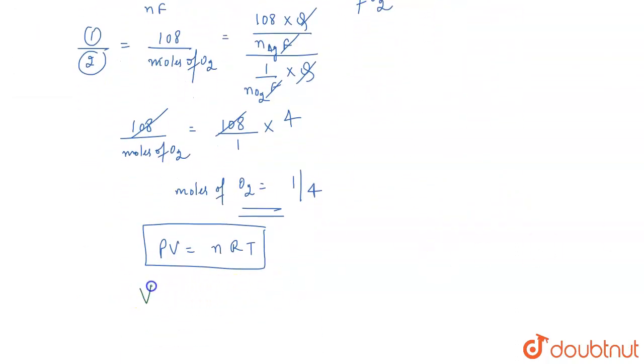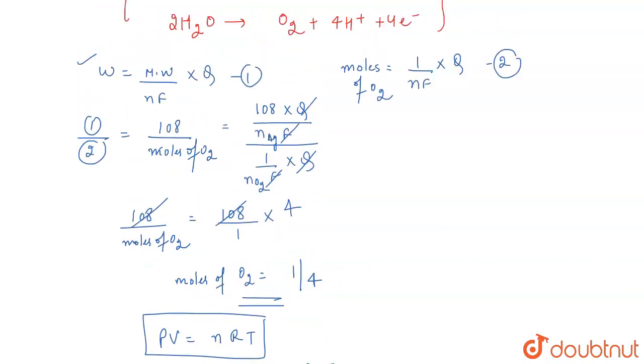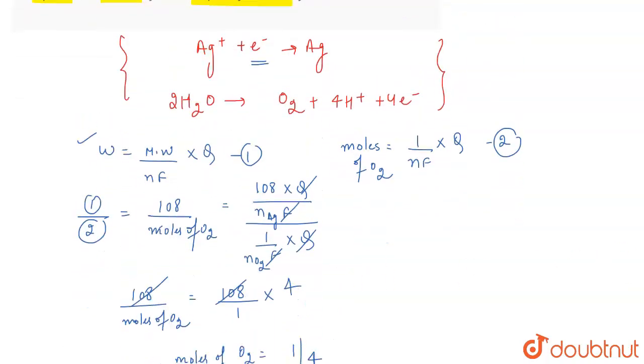So, if we put the values, we are going to get the volume. This will be equal to the number of moles, which is 1 by 4, R... We will take R as 0.083 because we are calculating it in bar. Temperature is 273, as given in the question.